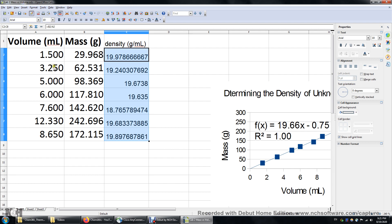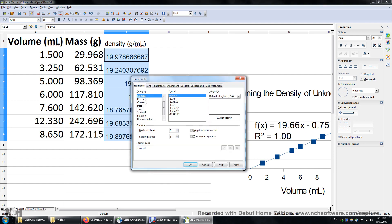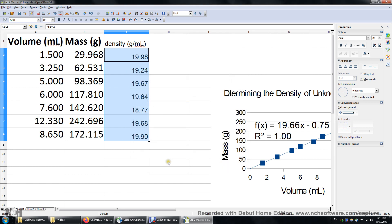And I want to be sure the number of decimal places makes sense. So right click, format cell, and click number. Let's keep two decimal places. So we have seven values.